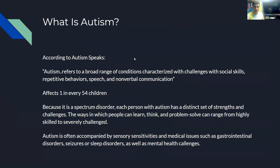According to Autism Speaks, autism refers to a broad range of conditions characterized with challenges with social skills, repetitive behavior, speech, and non-verbal communication. It affects one in every 54 children. Because it is a spectrum disorder, each person with autism has a distinct set of strengths and challenges. The ways in which people can learn, think, and problem solve can range from highly skilled to severely challenged.